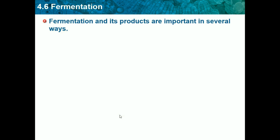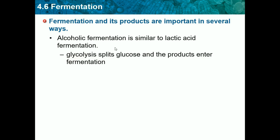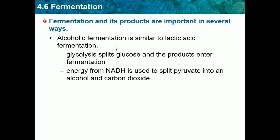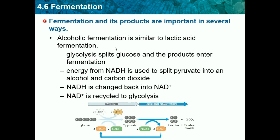There is another type of fermentation: alcoholic fermentation, which happens in foods and bacteria. It is similar to lactic acid fermentation — glycolysis splits glucose and the products enter fermentation. Energy from NADH is used to split pyruvate into an alcohol and carbon dioxide, giving two byproducts. Then NADH is changed back into NAD+, which is recycled back into glycolysis to restart the cycle.